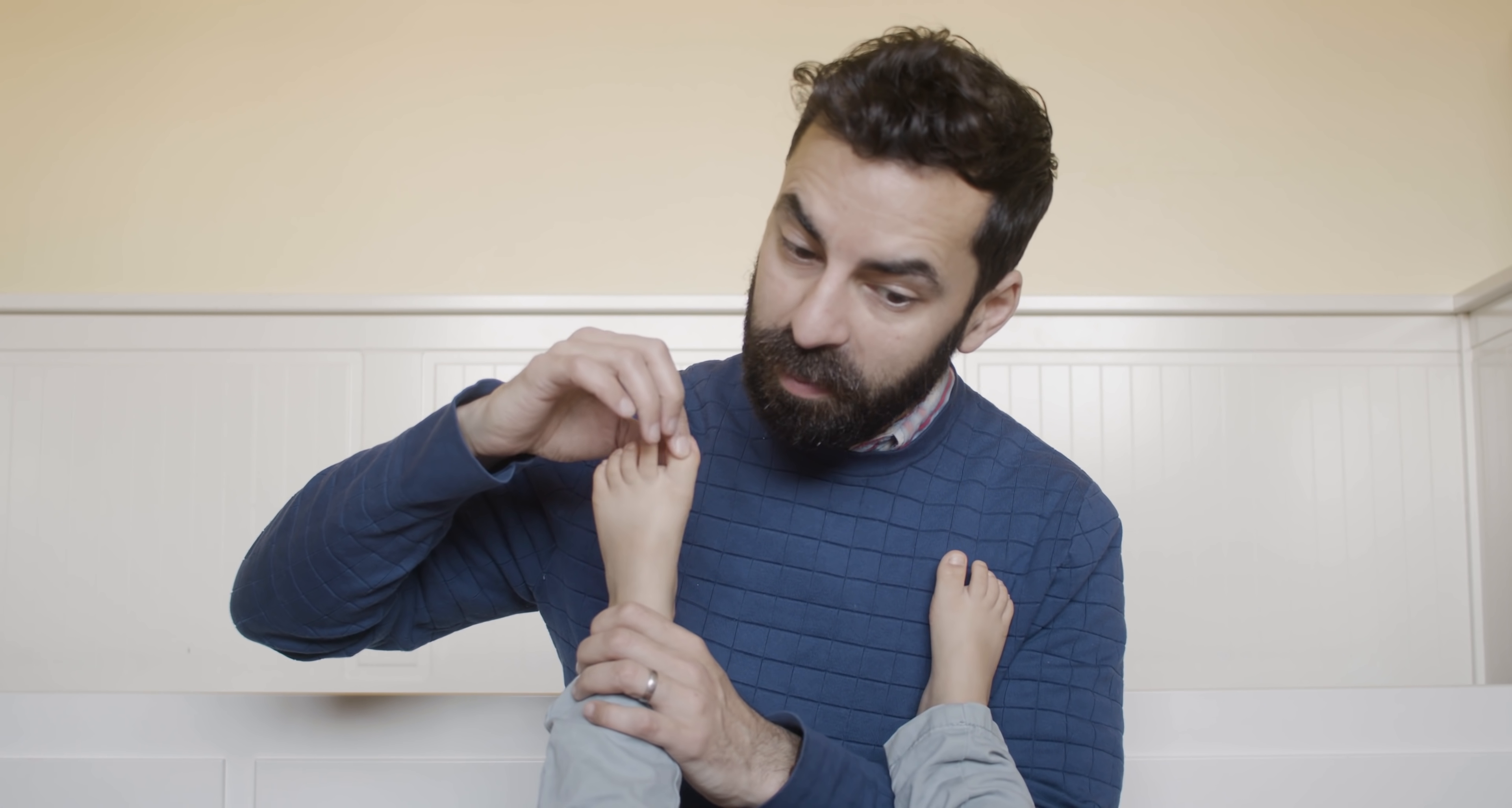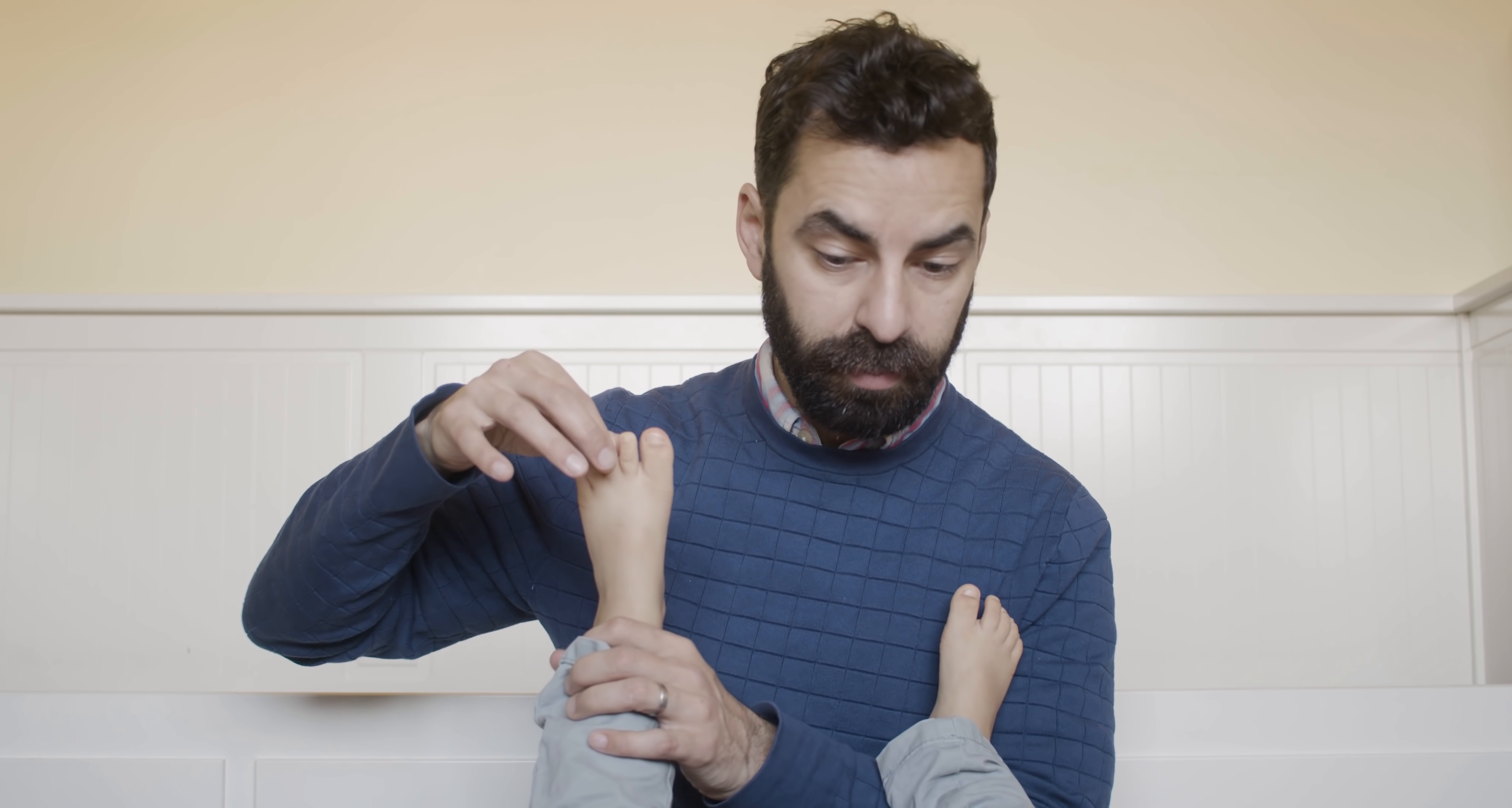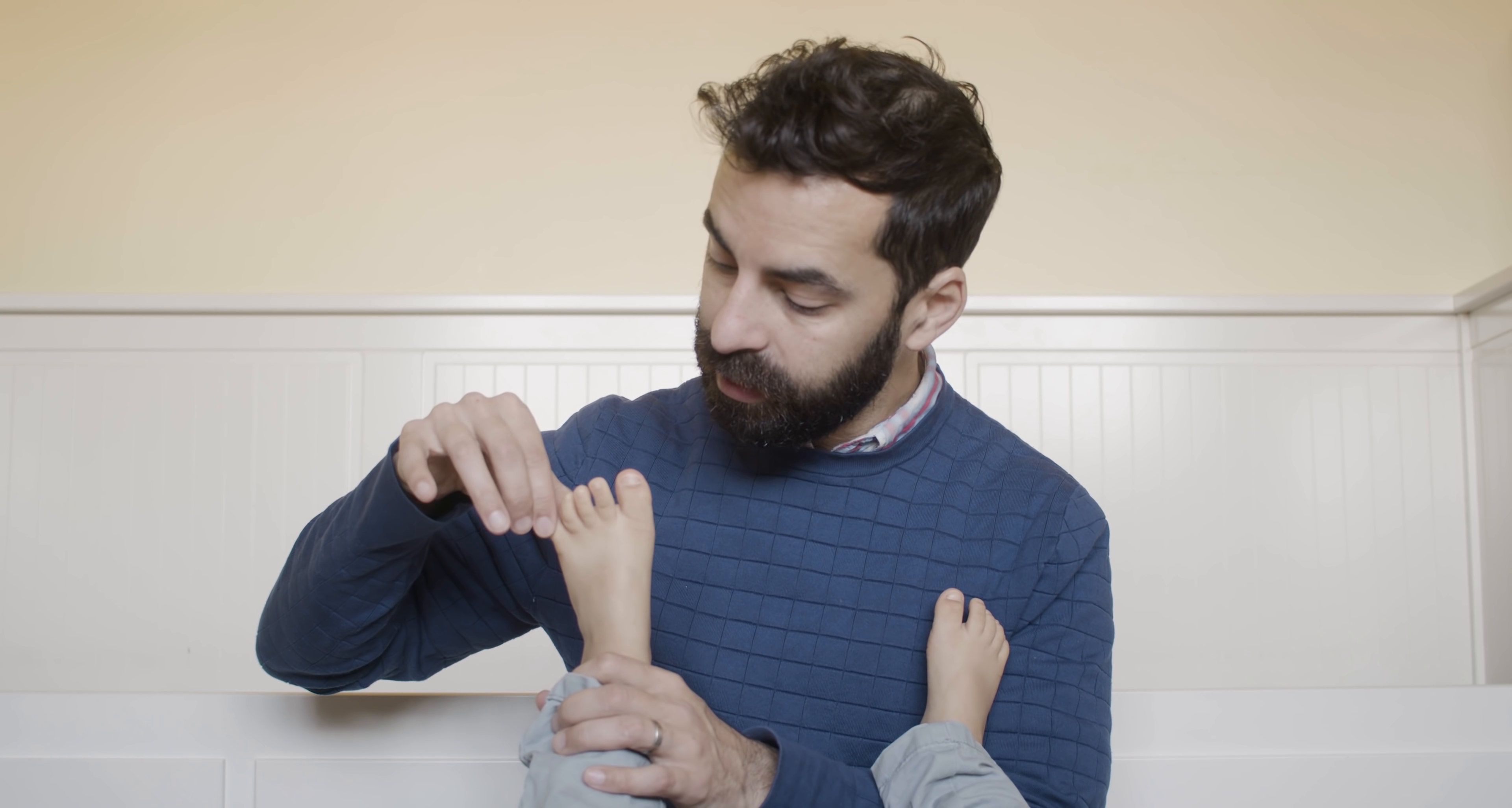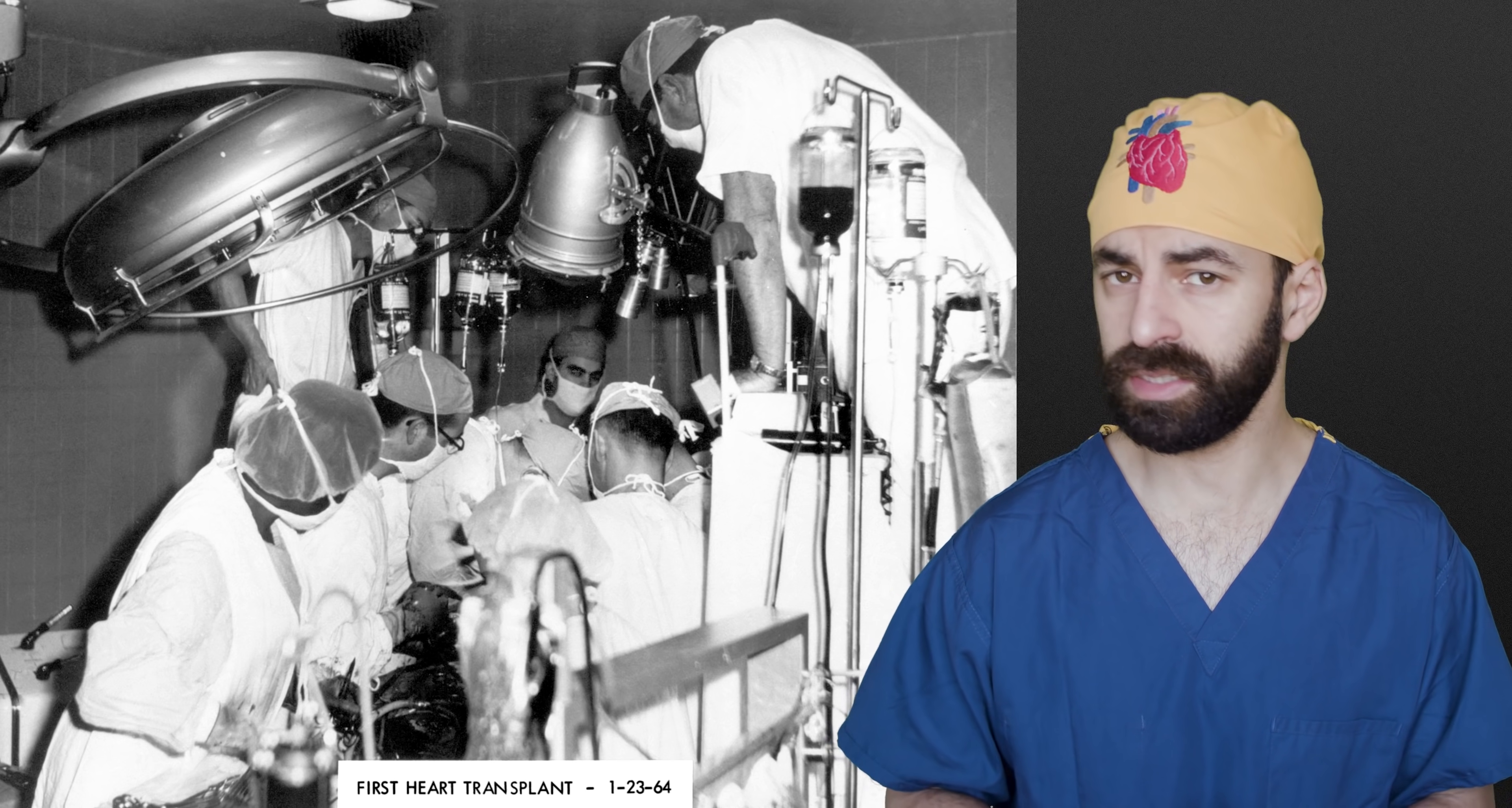This little piggy helped end the organ black market, and this little piggy helped a baby with hypoplastic left heart syndrome, this little piggy made a pancreas, and this little piggy grew bone, and this little piggy went rogue because it was a genetically enhanced human pig chimera with increased intelligence and it rose up chanting, four legs good, two legs bad.